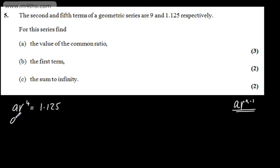We've got now the second term, so that's AR to the power of 1, and that's going to give us 9. I'm going to call this one equation 1, this one equation 2. We're going to do 1 divided by 2. If I do that, the A's are going to cancel out. R to the fourth over R gives me R cubed, and that's going to give me 1.125 divided by 9.